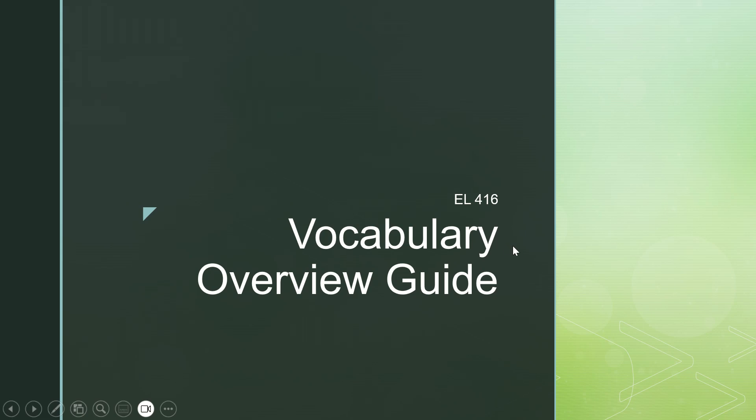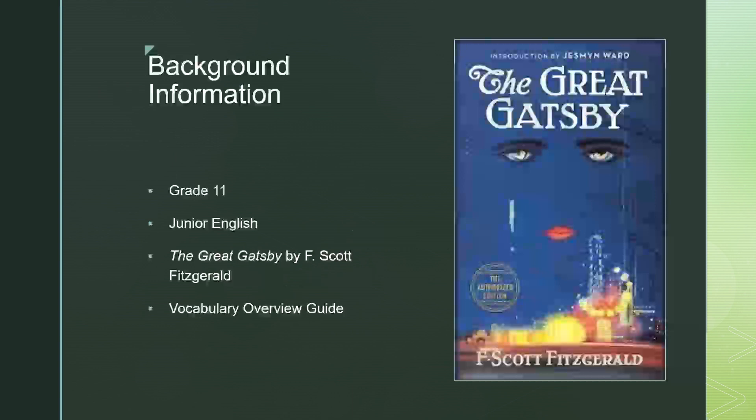For this project, I decided to go over the vocabulary overview guide. For background information, I am choosing to do this in a junior English class, so grade 11, and the text that I have chosen is The Great Gatsby by F. Scott Fitzgerald.